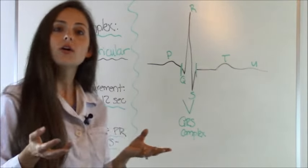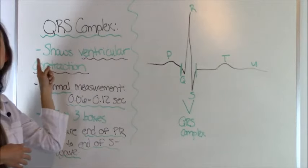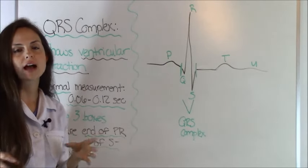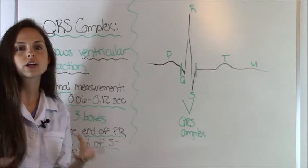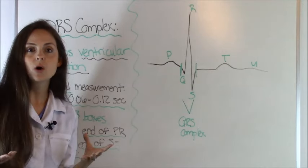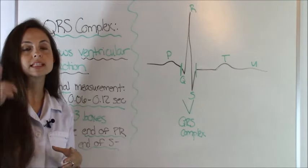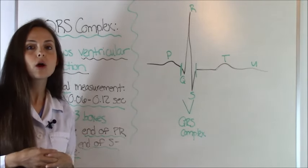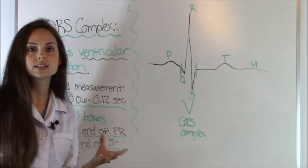So what does the QRS complex represent? The QRS complex shows ventricular contraction. This is when your ventricles are contracting, and on the EKG monitor, it's showing up as a big spike on the EKG strip, which is the electrical conduction system of your heart.